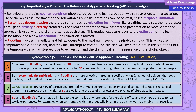Evaluations. Compared to flooding, the client controls systematic desensitization, making it a more pleasurable experience as they limit their anxiety. However, this slower process can result in more sessions for SD compared to flooding. Flooding isn't appropriate for older people. Both systematic desensitization and flooding are more effective in treating specific phobias, such as fear of objects, than social phobias, as it's difficult to simulate social situations in a therapist's office. Garcia Palacios found 83% of participants treated with VR exposure to spiders improved, compared to 0% of the control group, suggesting the principles of SD are valid and VR allows a wider range of phobias to be treated. However, their effects may be limited to the controlled environment of a therapist's office and may not translate to real-world experiences.